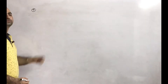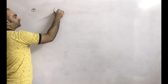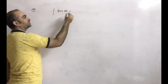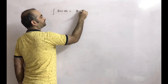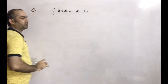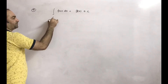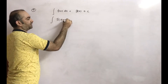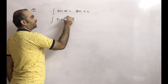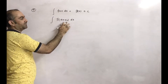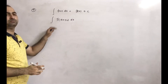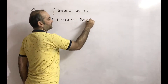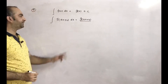Next is the fourth point. We know that integration of f(x)dx is g(x) plus c. Now, if you want to do integration of f of, instead of x, we are writing a linear equation — a*x plus b into dx. Then this integration is nothing but g of (ax+b) divided by the coefficient of x.